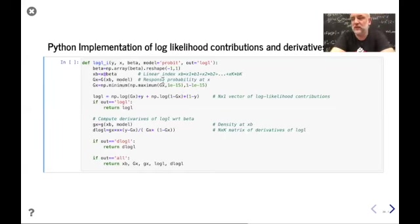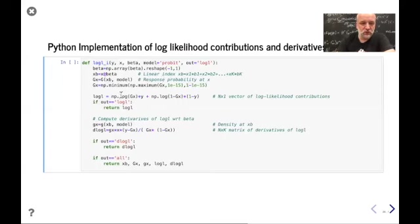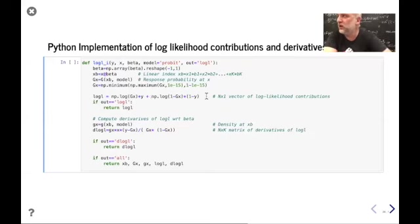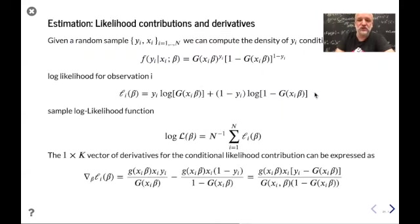This is something you have to think about when implementing on a computer — it has to be numerically stable. Then we get the log likelihood, which is the log of the probability that y equals 1 — g(x'beta) trimmed — times the observed outcome y. That gives an n-by-1 vector of log likelihood contributions. For people with y equal to 1, that's their contribution; for y equal to 0, there's a similar term.